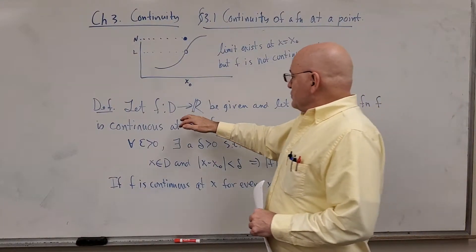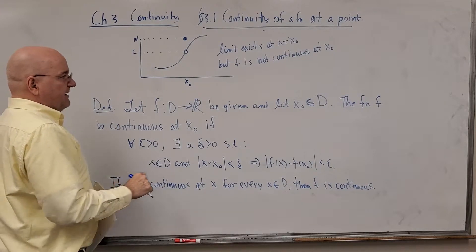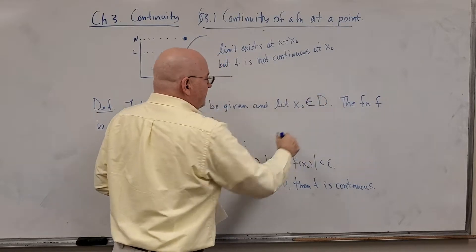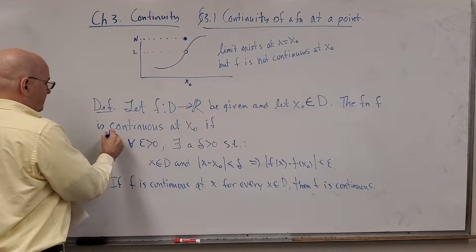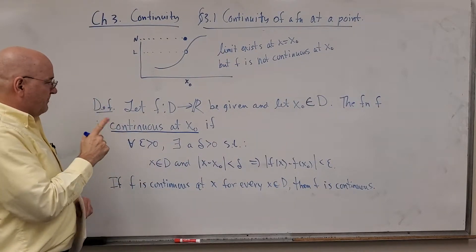Okay. So let F be a function from domain capital D into R. Let that be given and let X naught be an element, any element of the domain. The function F is continuous at X naught. That's what I'm defining here at the one point X naught.